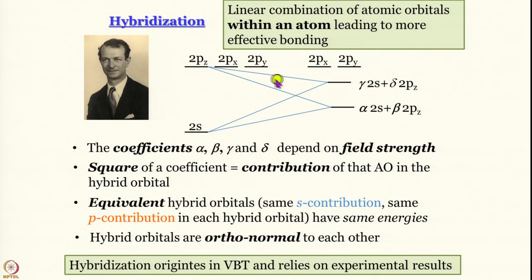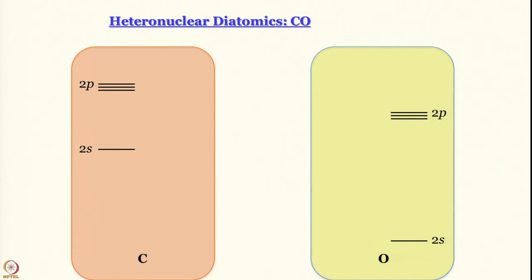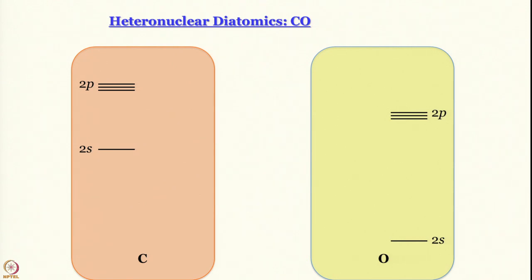One thing to remind you: it is not necessary that all hybrid orbitals be equivalent — they can have different energies depending on the coefficients alpha, beta, gamma, delta. The model involves formation of two non-equivalent hybrid orbitals of two different energies for carbon as well as for oxygen. For carbon, H1 is a lower energy hybrid orbital and H2 is a higher energy hybrid orbital. Hybridization here is for sigma bonds, so the p orbital participating would be pz if z is the direction of approach of the two nuclei.